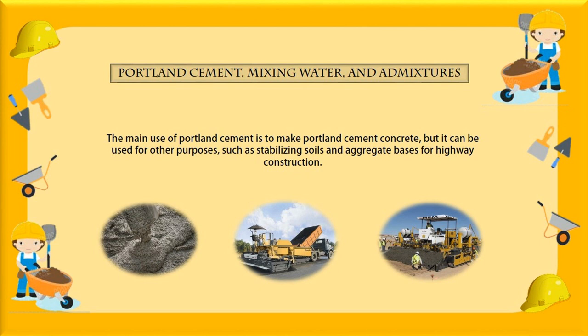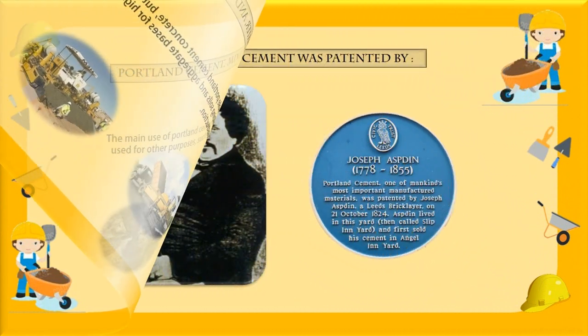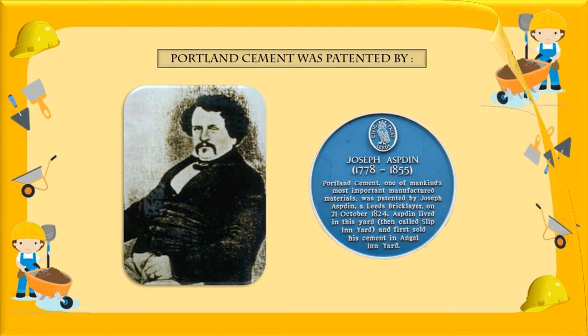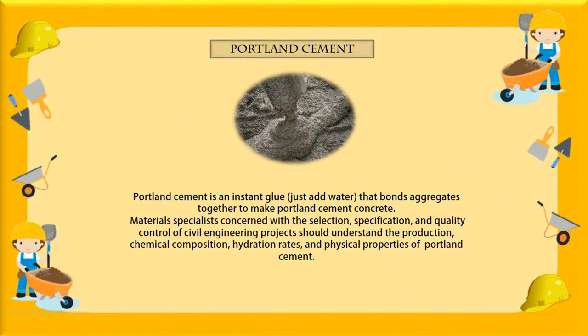There are many types of concrete based on different cement. However, Portland cement concrete is so prevalent that unless otherwise identified, the term concrete is always assumed to mean Portland cement concrete. Portland cement was patented by Joseph Aspin in 1824, and was named after the limestone cliffs on the Isle of Portland in England (Kosmatka et al., 2011). Portland cement is an ingredient — along with water — that bonds aggregate together to make Portland cement concrete. Material specialists concerned with the selection, specification, and quality control of civil engineering projects should understand the production, chemical composition, hydration rate, and physical properties of Portland cement.